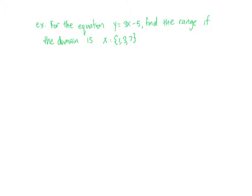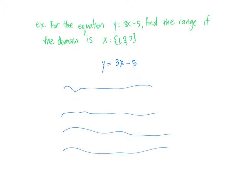All right, let's do one more. So for this one, we have been given an equation: y equals 3x minus 5. And we are given the domain and being asked for the range. We have been told that x can be 1, 3, and 7, and we are being asked what y can be. So we're going to do three sets of calculations. Since we know x can be 1, we'll take that 1 and substitute it in. So y is equal to 3 times 1 minus 5.